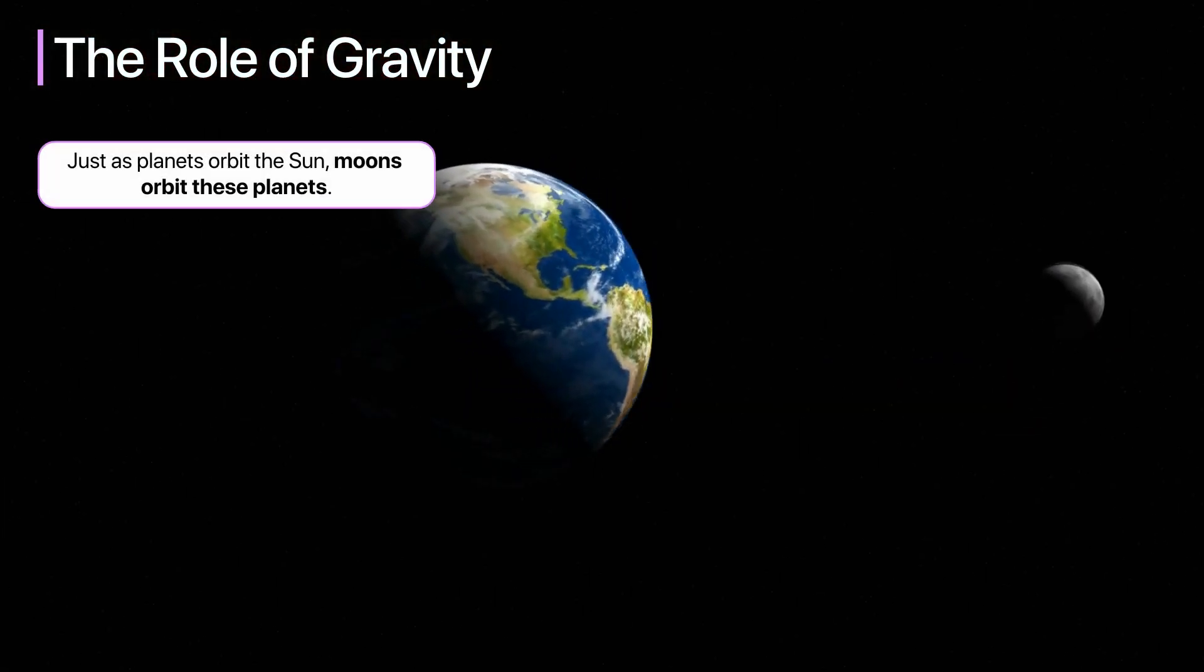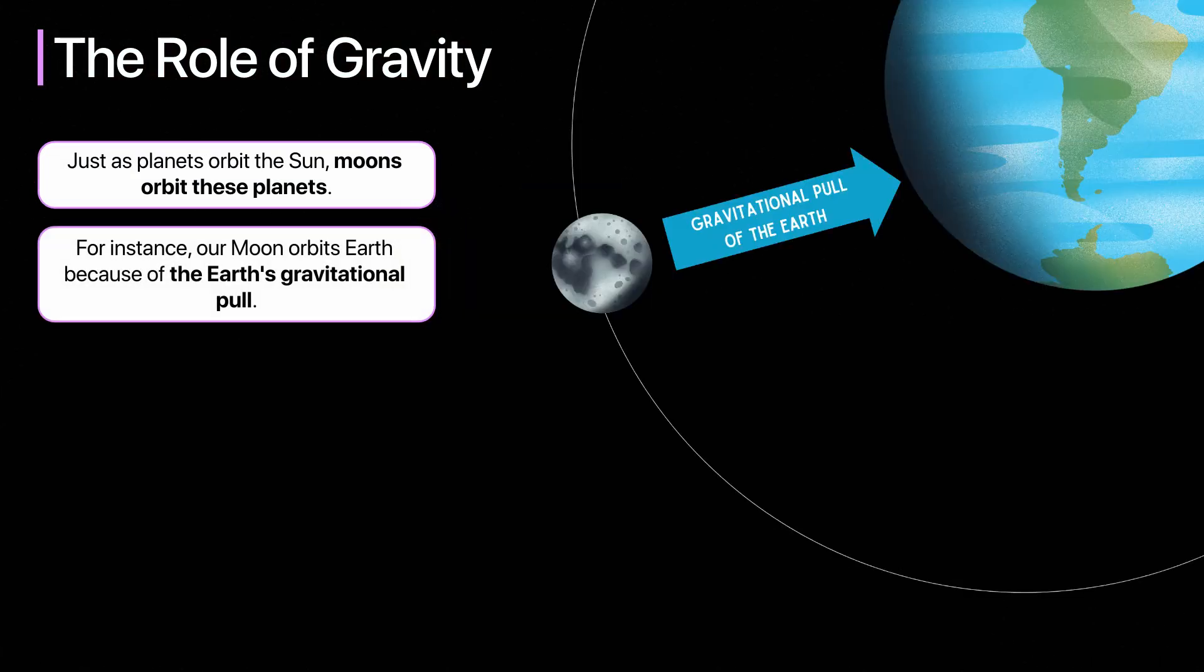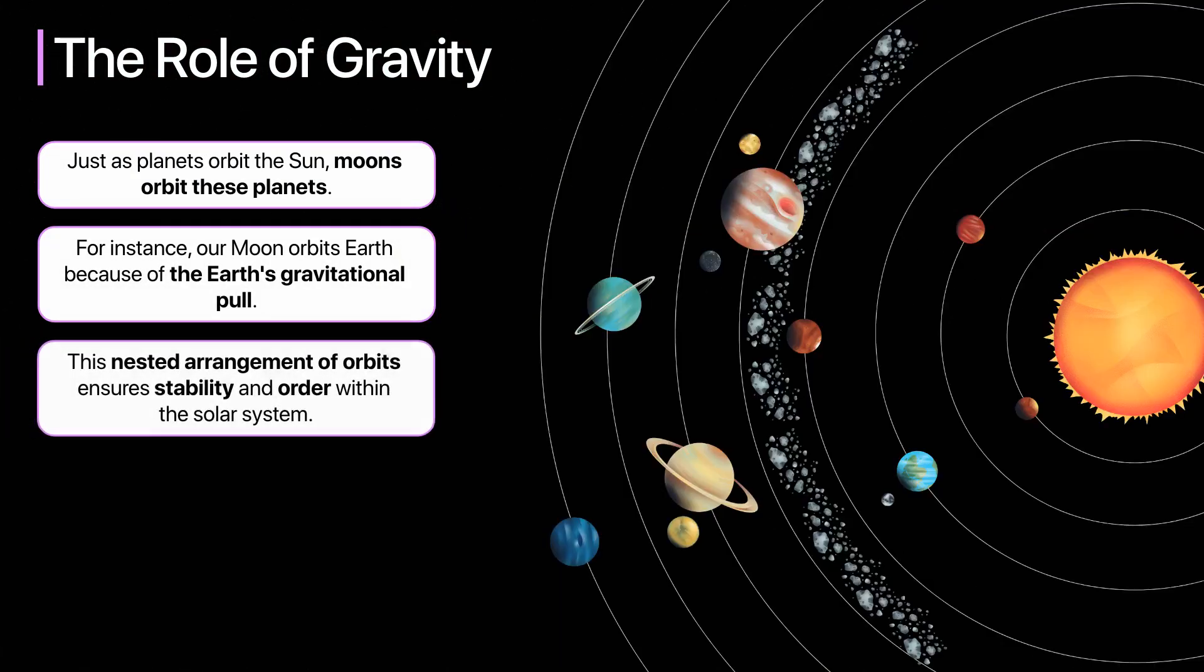As planets orbit the Sun, moons orbit these planets. For instance, our Moon orbits Earth because of the Earth's gravitational pull. This nested arrangement of orbits ensures stability and order within the solar system.